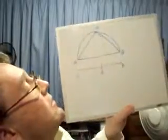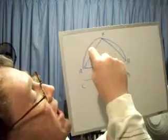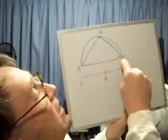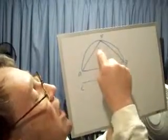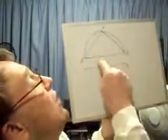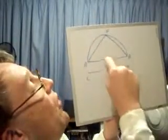And since CD has not to CE the ratio which a square number has to a square number, neither has the square on AB to the square on AF the ratio which a square number has to a square number. Therefore AB is incommensurable in length with AF — this is by Euclid Book 10, Proposition 9. So even though the squares are commensurable, the lines AB and AF themselves are not commensurable. Therefore AB and AF are rational straight lines commensurable in square only.